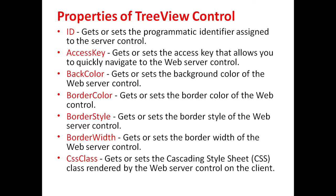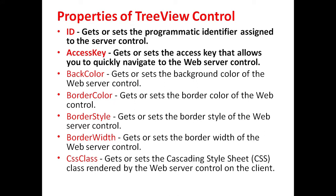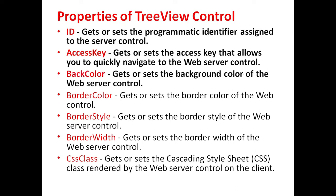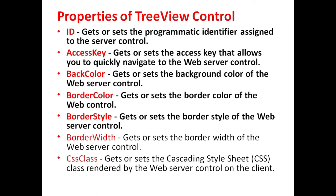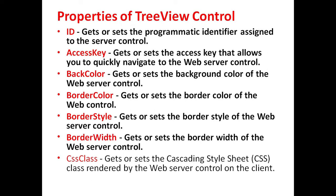Different properties of TreeView controls are: ID, which is used to get or set the programmatic identifier assigned to the control; AccessKey, which is used to get or set the access key that allows the user to quickly navigate to the web server control; BackColor, which is used to get or set the background color of the web server control; BorderColor, which is used to get or set the border color of the web control; BorderStyle, which is used to get or set the border style of the web server control; and BorderWidth, which is used to get or set the border width of the web server control.